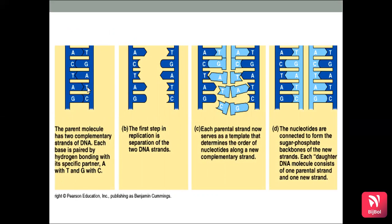In the pictorial representation of DNA replication, the parent molecule has two complementary strands with each base paired by hydrogen bonding with a specific partner — A with T, G with C. The first step is separation of the two DNA strands. Each parental strand then serves as a template that determines the order of nucleotides along a new complementary strand. The nucleotides are connected to form the sugar-phosphate backbone of the new strands, so each daughter DNA molecule consists of one parental strand and one new strand.